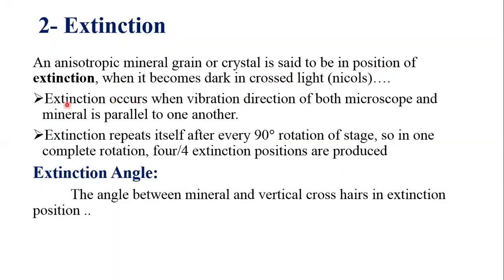Why does extinction occur? Extinction occurs when the vibration direction of both the microscope and the mineral are parallel to one another. A mineral becomes dark whenever the vibration direction of the mineral becomes parallel to the vibration direction of the microscope.